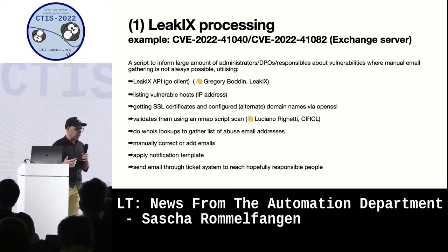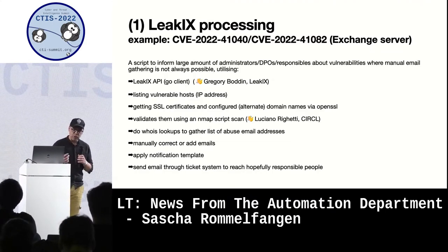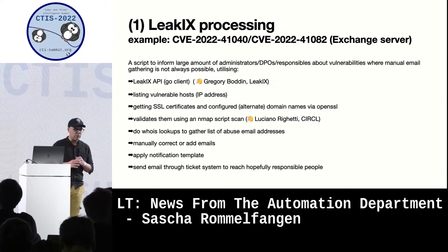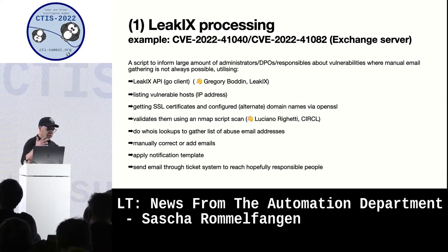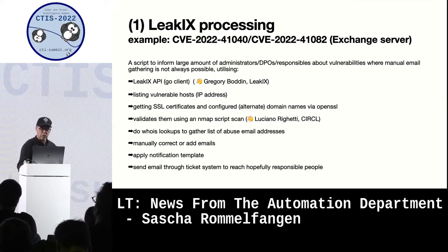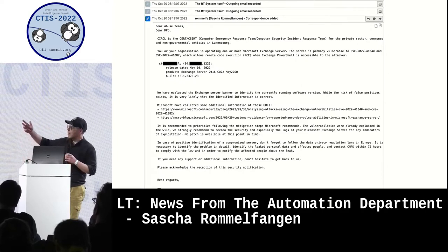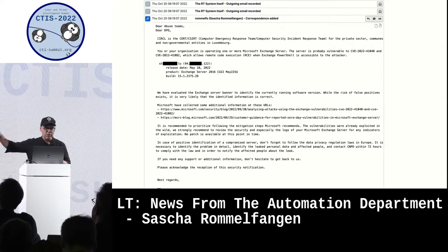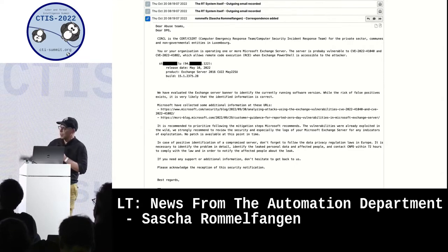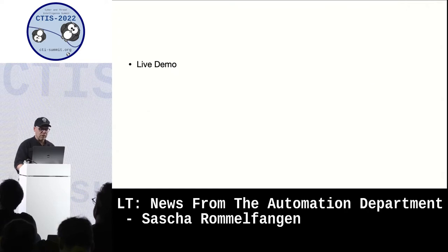From there we do whois lookups on DNS, on the domain name system, and so on. Then we get a list of email addresses that we can manually correct if necessary, or augment when we see that it's quite short. Then a notification template is associated and emails are sent through the ticket system to the hopefully responsible people. The result looks like one of our standard emails with condensed information about what it is and what they should do.